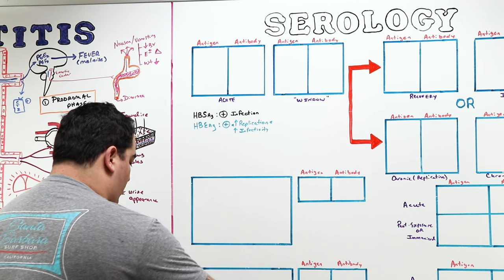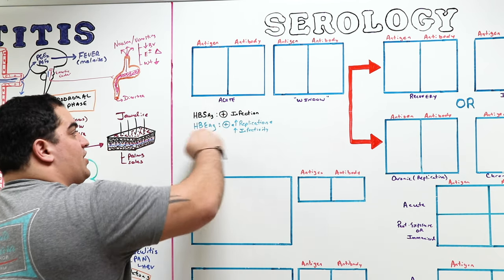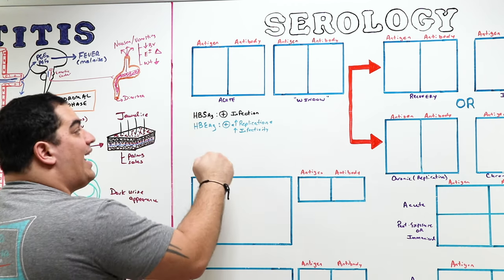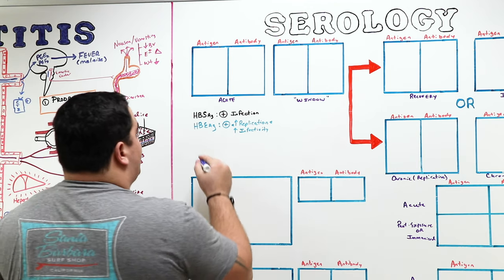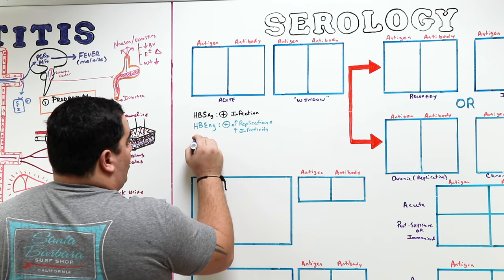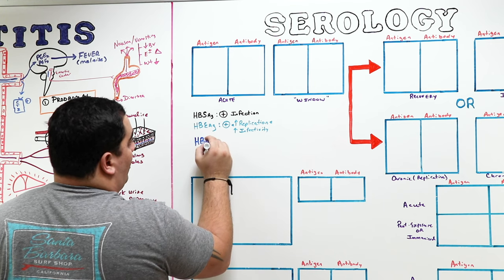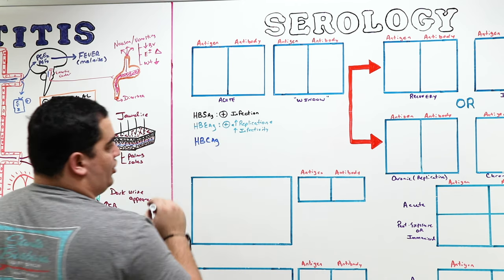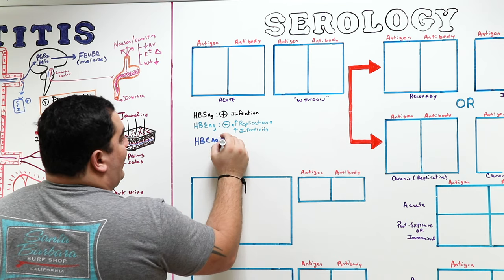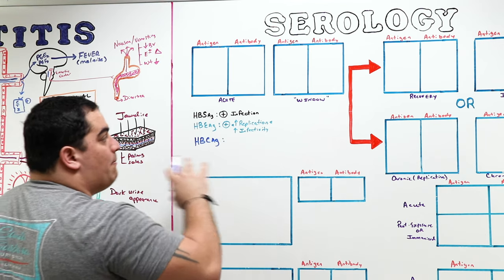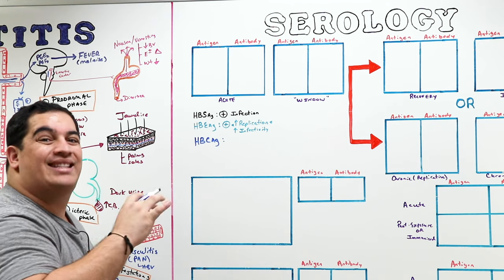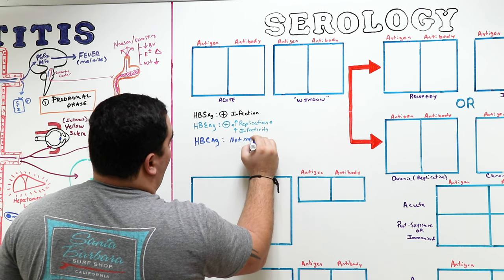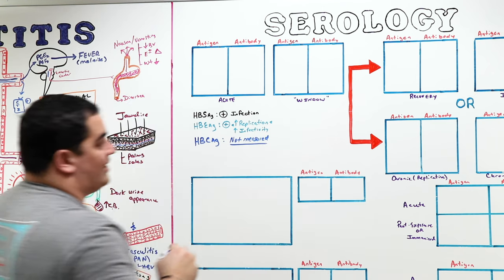The next antigen is the hepatitis B virus core antigen — you can remember 'core' for capsid. The capsid has proteins with antigens on it. Now, we don't actually measure the core antigen itself — we measure antibodies against it. But I want you to know that the core antigen is not directly measured; we do measure antibodies directed against it.